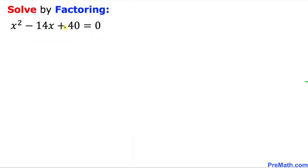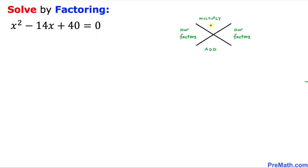Now we are going to solve this quadratic equation by the factoring technique. The very first thing we are going to do is focus on the constant part, which is positive 40 — that goes on the top of the x-factor diagram. Now let's focus on the middle number, the coefficient of x, which is negative 14 — that goes at the bottom.